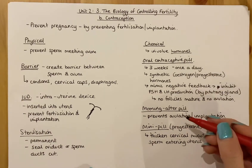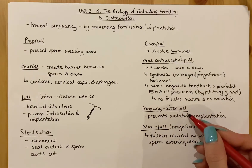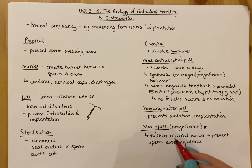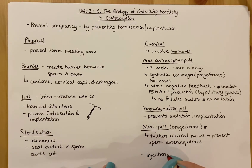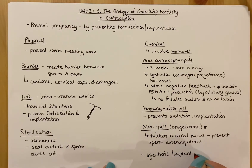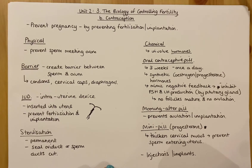In addition to the oral contraceptive pill, the morning after pill, and the mini pill, you can also get injections or implants. These are normally made of progesterone, so they work similarly to the mini pill, but are an option if the oral pill is not suitable for a person.